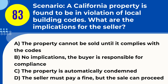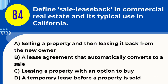Question 83. Scenario: A California property is found to be in violation of local building codes. What are the implications for the seller? A. The property cannot be sold until it complies with the codes. B. No implications, the buyer is responsible for compliance. C. The property is automatically condemned. D. The seller must pay a fine, but the sale can proceed. Answer: A. Explanation. In California, if a property is found to be in violation of local building codes, it cannot be sold until the issues are addressed and the property is brought into compliance. The seller is responsible for ensuring that the property meets all applicable codes and regulations before the sale can proceed.